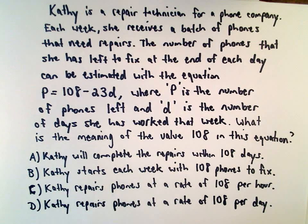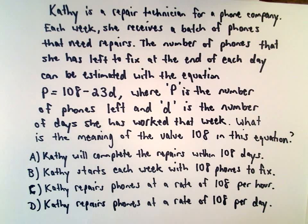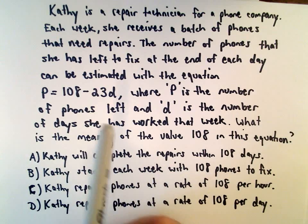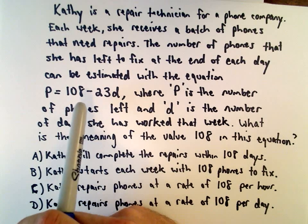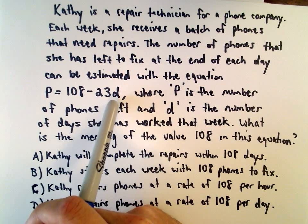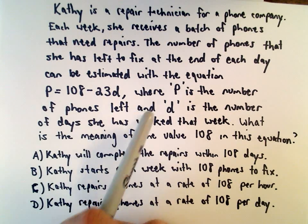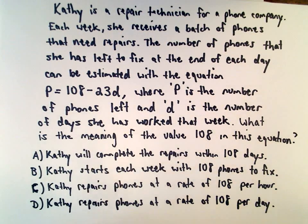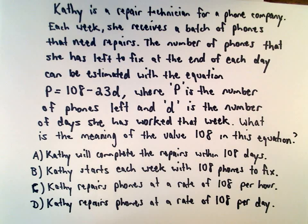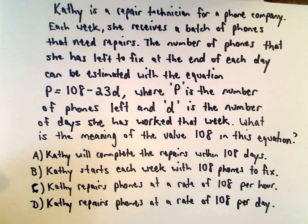Okay, so Kathy is a repair technician for a phone company, and each week she receives a batch of phones that need repairs. The number of phones that she has left to fix at the end of each day can be estimated with the equation P equals 108 minus 23 multiplied by d, where P is the number of phones left and d is the number of days she has worked that week. We want to know what's the meaning of the value 108 in this equation.